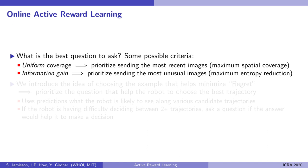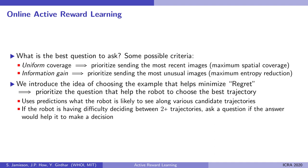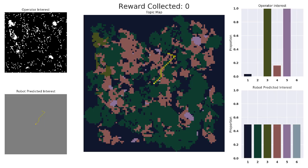We explore the problem of how the robot should choose what to send to the operator. This is an online active learning problem. The simplest approach is to always send the most recent image, while another is to send back the images which best help the robot to reduce uncertainty in its reward model. We compare these against a novel regret-based approach, where the robot asks questions which are immediately useful for helping it to plan a better trajectory.